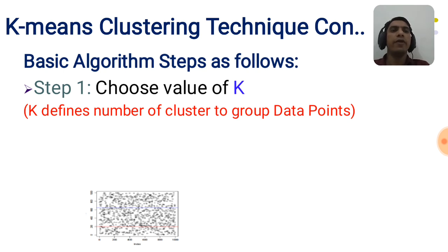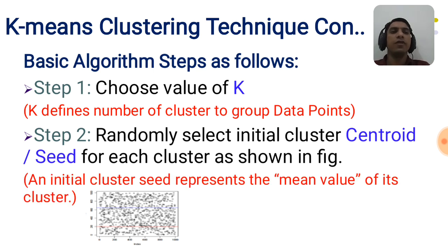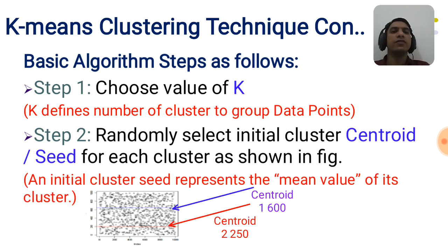Usually we will take k equal to 2, 3, 4, 5, etc. Step number two: randomly select initial cluster centroids for each cluster. Here in this figure we have taken centroid 1 as 600 and centroid 2 as 250.